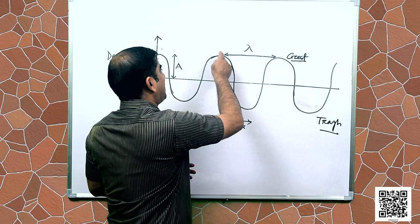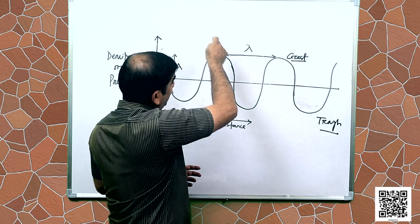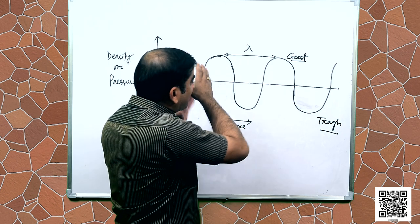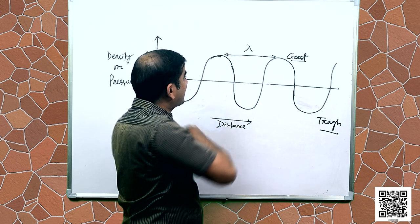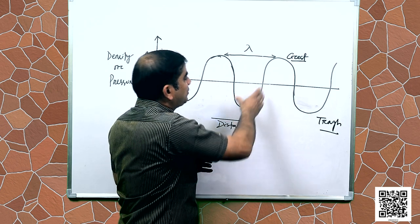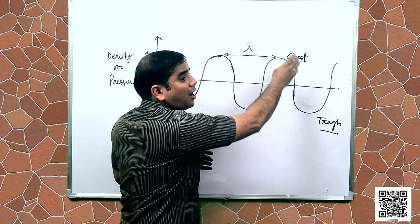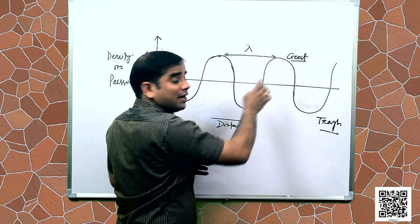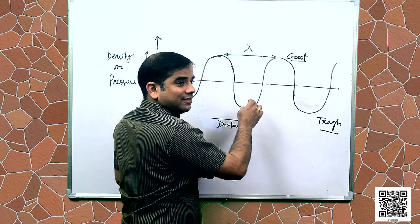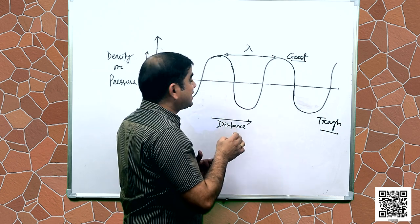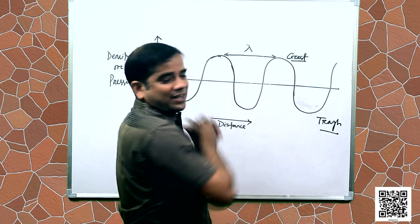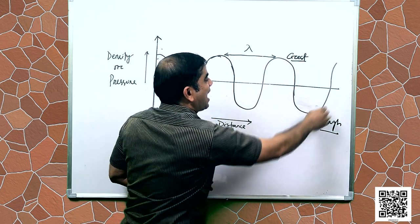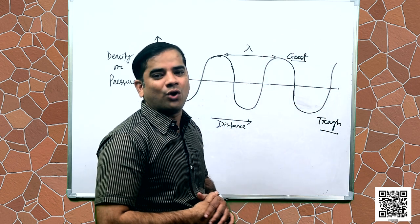The peak means the highest point, so the peak represents maximum compression. As per the particles' movement, they go down and then up again. The valley below the straight line is your rarefraction. So we have compression and rarefraction alternating.